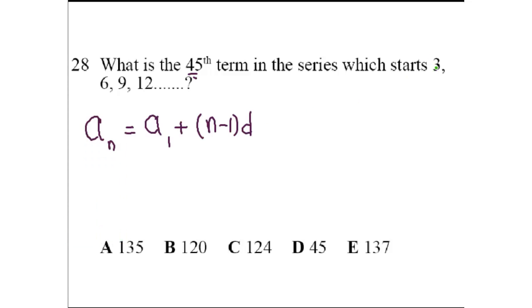So here, 3, 6, 9, 12, our d, our difference is 3, right? It's plus 3. 3 plus 3 is 6, 6 plus 3 is 9, and so on. A_1, our first term here is 3.